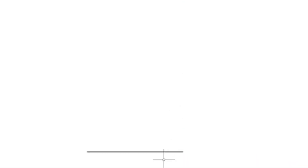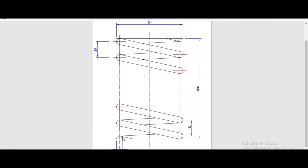We're going to start by drawing the outside diameter. Our outside diameter is 64, so we're going to measure 64 here. Then we want to draw the center line of our wire. From this point, the wire diameter to that point is 6 millimeters, so the distance from the outside to the center is 3 millimeters.